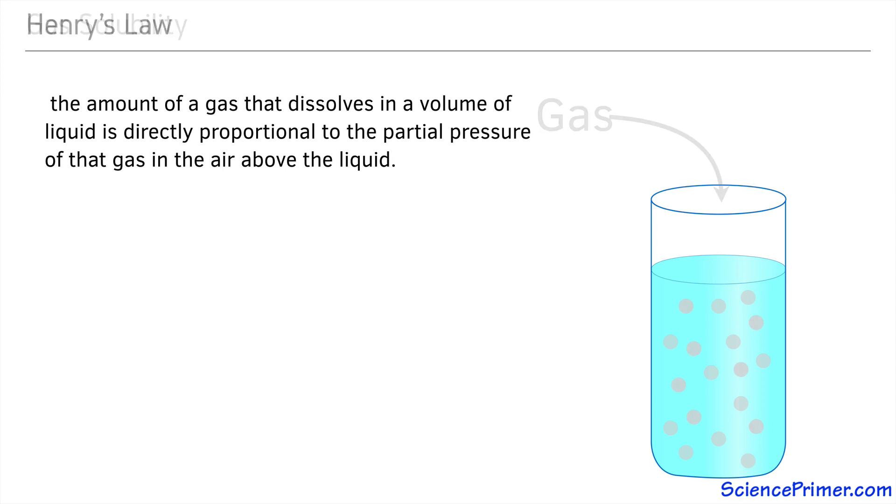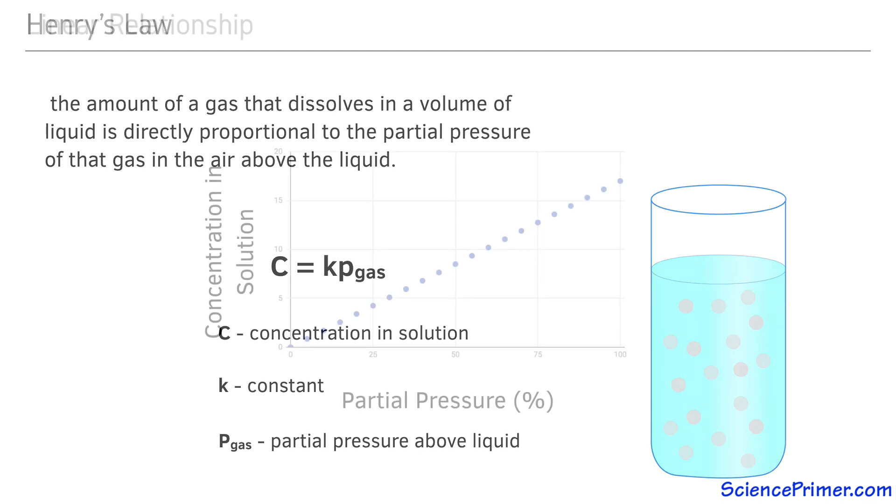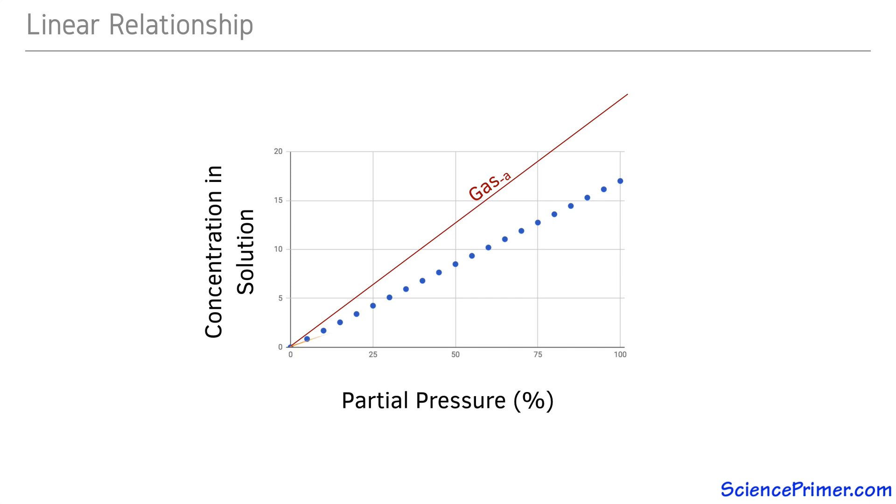This relationship is expressed mathematically as C equals Kp, where C is the concentration of the gas in solution, K is a constant, and P is the partial pressure of the gas in the air above the liquid. For any particular gas, this is a linear relationship, but the constant has to be experimentally determined for each gas, liquid, and temperature combination.